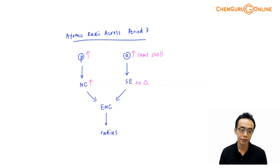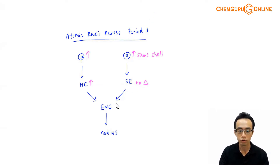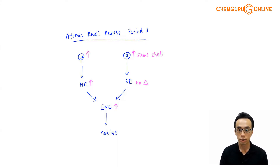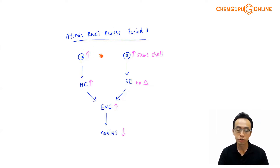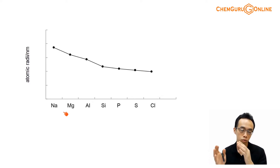Combining these two ideas: the increase in nuclear charge leads to a stronger attraction, while the shielding effect stays roughly the same. So the effective nuclear charge increases overall, there is a stronger attraction between the nucleus and the valence electron, the nucleus pulls the electrons closer, and the radius decreases. This explains why the atomic radii across period 3 decrease in general.